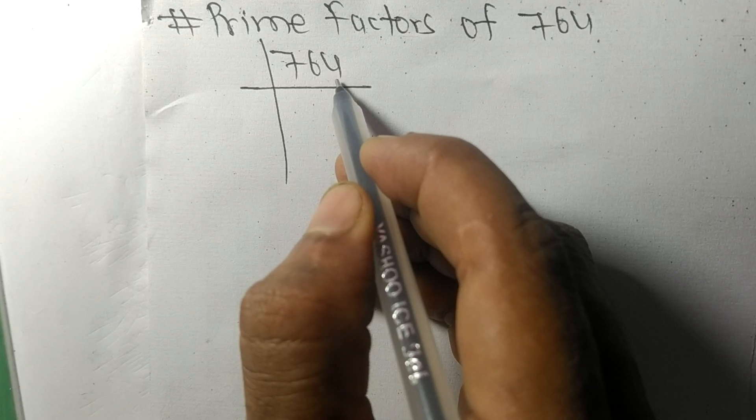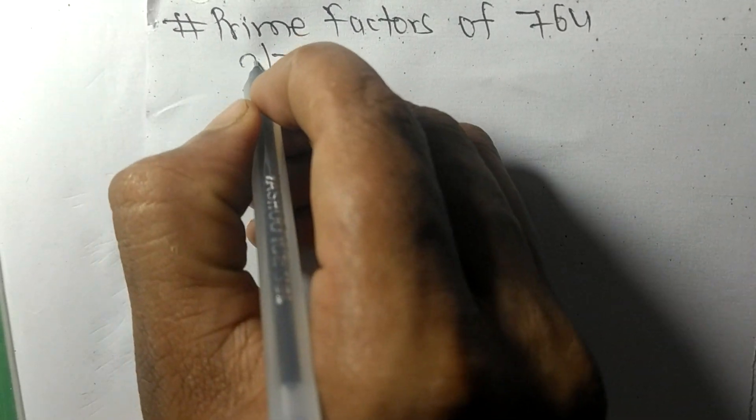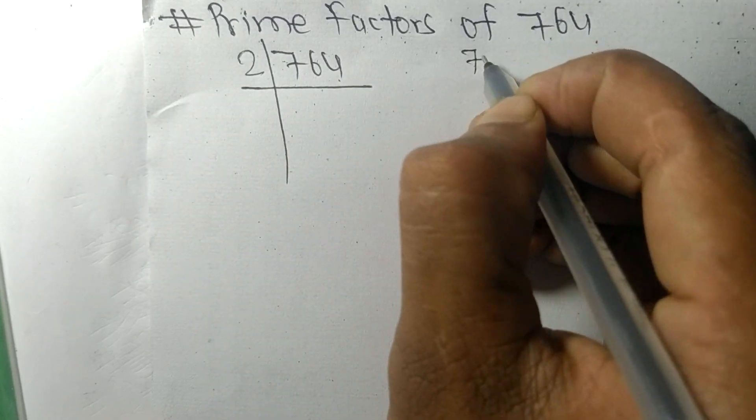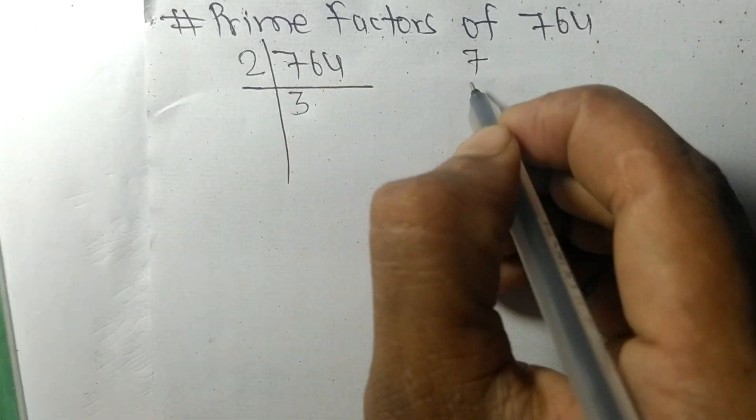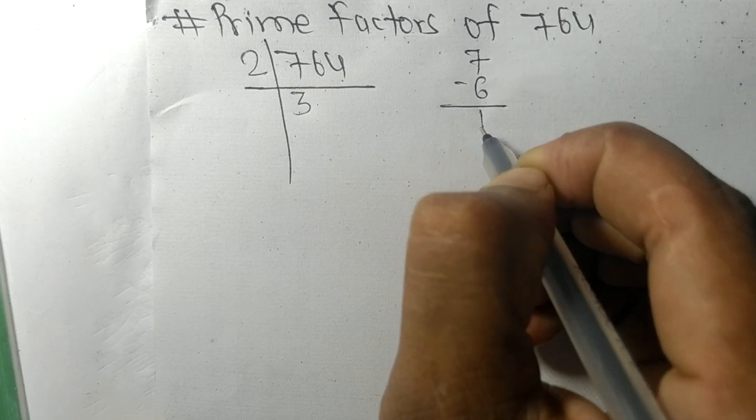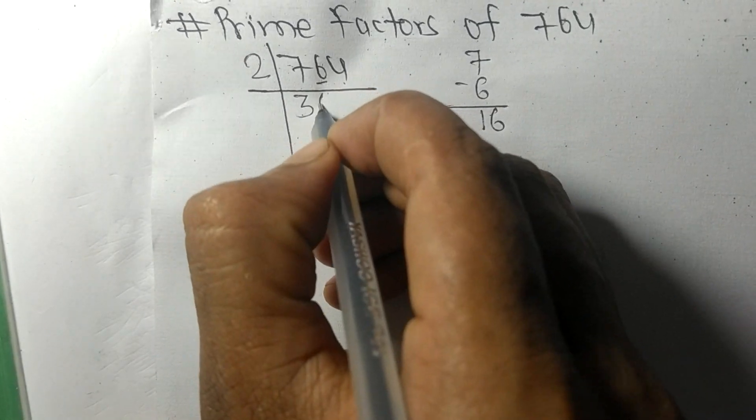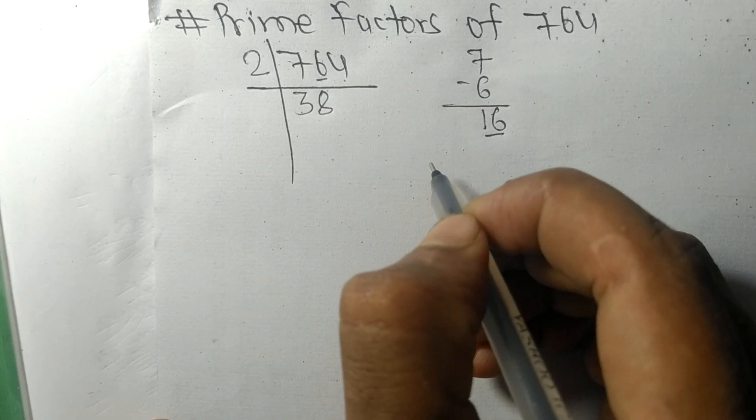2 times 3 means 6. On subtracting we get 1, and this 6, 16. 2 times 8 means 16, and 2 times 2 means 4. Again we have an even number at last, so it is divisible by 2.